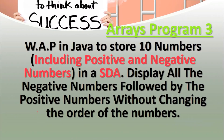What's up guys, welcome to the TechWeen channel. Ab hum baat karenge program number 3 ki - write a program in Java to store 10 numbers including positive numbers and negative numbers in a 1D array. Humein 10 numbers input karvane hain user se, chahe wo positive ho ya negative, 1D array ka use karna hai. Jo main calculation hogi wo display all the negative numbers followed by the positive numbers without changing the order of the numbers.